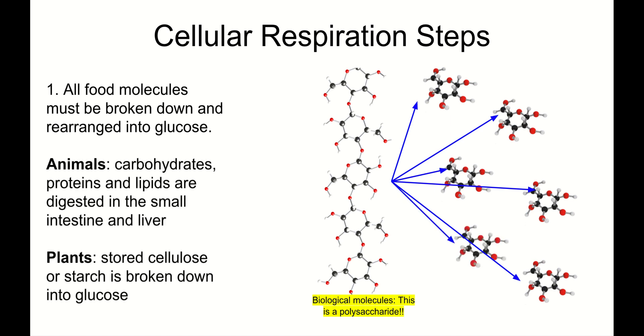In animals, the food, carbohydrates, proteins, and lipids are digested and broken down into glucose in the small intestine and liver. That's something we're going to learn more about next semester when we study human body systems. In plants, the stored cellulose or starch is broken down into glucose in the sugar sinks. For example, I've got a picture of a carrot on the screen. A carrot is filled with starch. And when the rest of the plant needs some energy to grow, that starch stored in the carrot could be broken down into glucose and used to create ATP and fuel some cell processes.